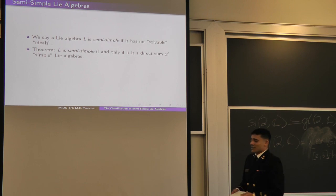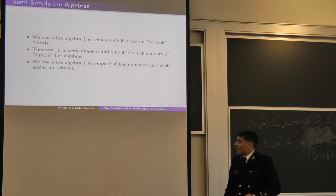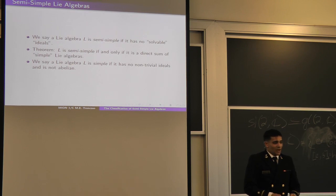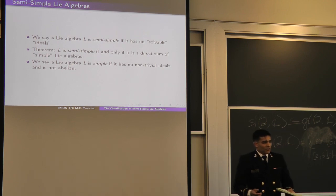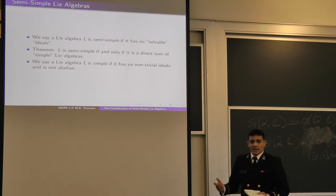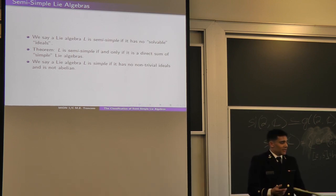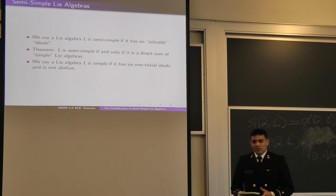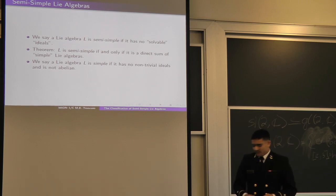We'd like to know what a simple Lie algebra is. A Lie algebra L is simple if it has no non-trivial ideals and it is not abelian. The restriction to not being abelian is because if we have an abelian Lie algebra, say the one-dimensional Lie algebra, it would actually be simple but not semi-simple — and that's a little undesirable.